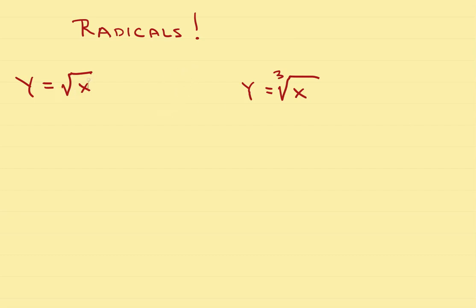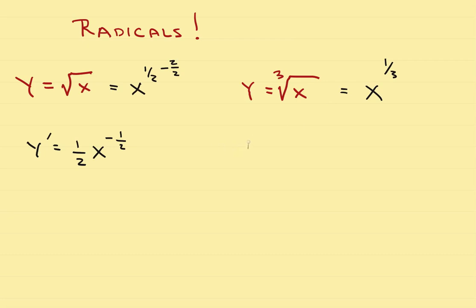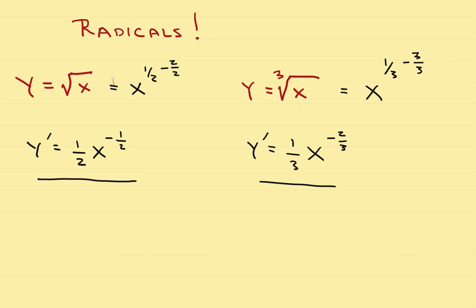If you have radicals, change them from radical form into exponential form. The square root of x becomes x to the 1 half, so the derivative is 1 half x. Rather than subtracting 1, subtract 2 halves, giving x to the negative 1 half. For a cube root, x to the 1 third power: bring the exponent down and take away 3 thirds, so 1 third minus 3 thirds gives negative 2 thirds. To handle radicals, change them into exponential form first.